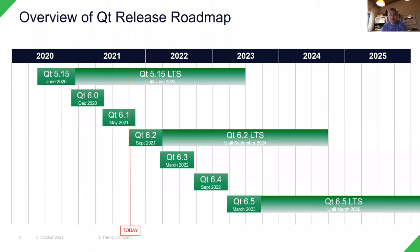Here is a very brief high-level overview of where we are in the Qt release roadmap — this is just the framework releases. Qt 6.2, just out, will be supported for three years for commercial license holders. There will also be multiple patch releases during the first six months for open source users, and then when Qt 6.3 is out, we expect that to be taken by open source.